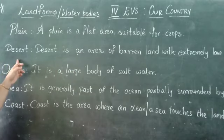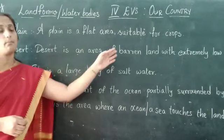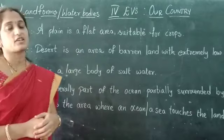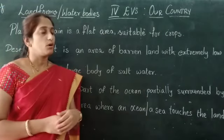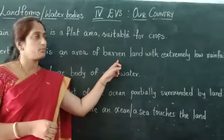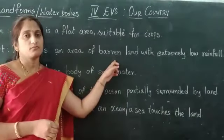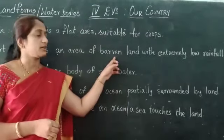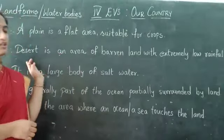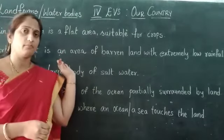Now coming to the next one — desert. A desert is an area of barren land with extremely low rainfall. What is meant by barren? Barren means empty. Only sand is present in the desert.